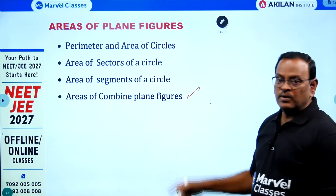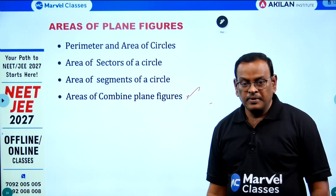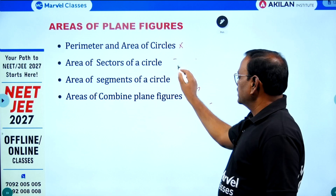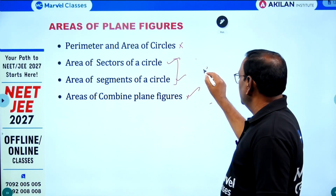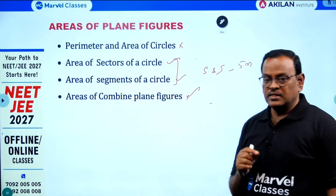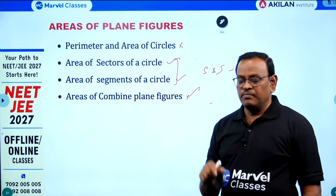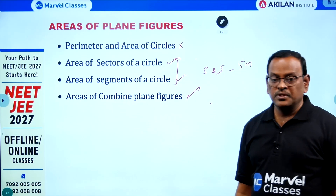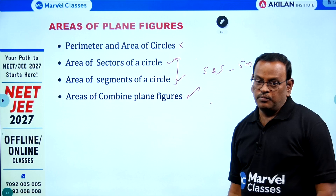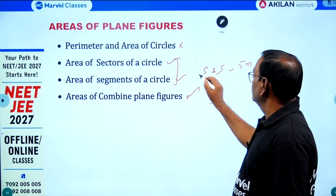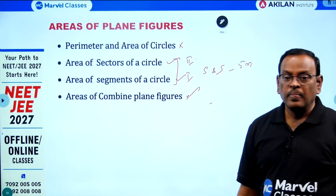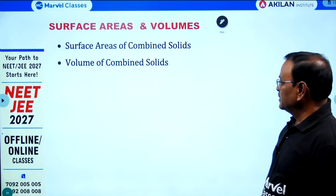One topic is deleted, but last year one case study question came from combined figures. You can expect questions on sectors or segments — either sector alone, segment alone, or both sector and segment combined. A five-mark question can involve area of a minor sector and area of a major segment. Single concepts can appear in two or three marks. First preference is segment and second is sector. These two topics can also appear in case study questions.